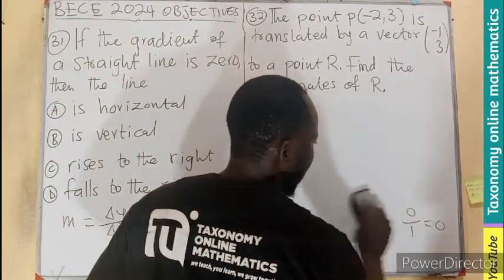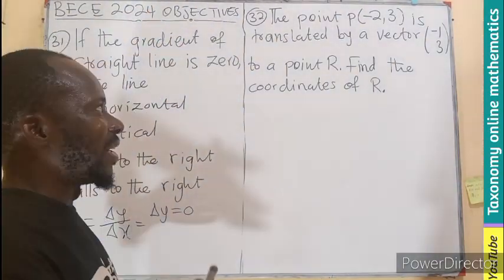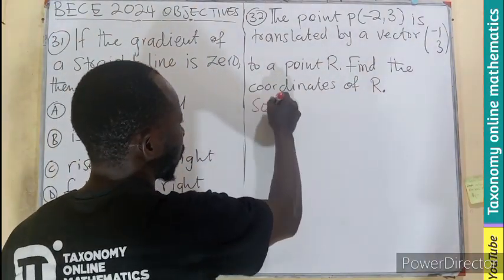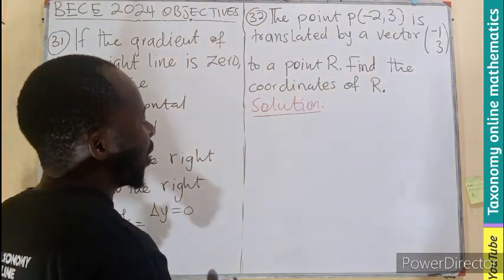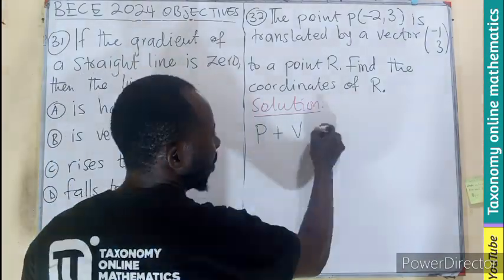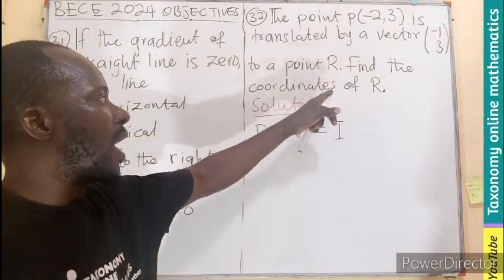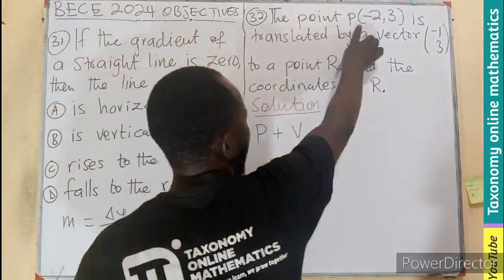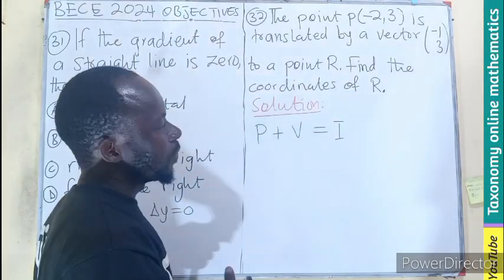We are given the point P as (-2, 3) and this point is translated by the vector. So we know from here, we know if I have a point plus the translated vector, it will give us the image. If you take any point and you add a translated vector to it, it gives you the image. So here we have to find the coordinate of what? R, which is the point P translated by the vector V to a point R, meaning that becomes the image.